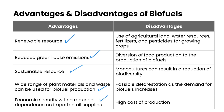In terms of disadvantages: we do have to use agricultural land, water resources, fertilizers, and pesticides to grow the crops. There's also a diversion of food production into biofuel production, monocultures can result in a reduction of biodiversity, possible deforestation as demand for biofuels increases, and there's a higher cost of production. Those are the advantages and disadvantages of biofuels, and that's our fossil fuels versus biofuels overview. We'll see you in the next one.